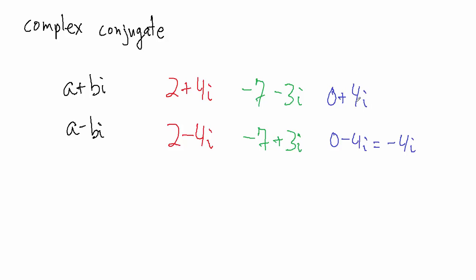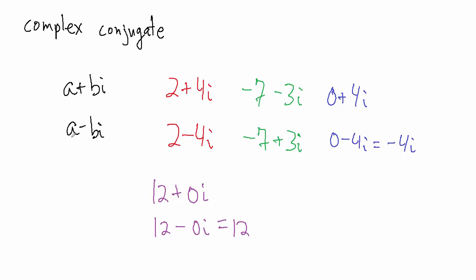So if you have a complex number which is just 4i, then the complex conjugate is going to be negative 4i. What if you have a complex number 12? That might look weird — aren't complex numbers supposed to have i's? Well, technically no. A real number is just a special type of complex number with imaginary part 0. So this is the same thing as 12 plus 0i, and the complex conjugate is going to be 12 minus 0i, which is still just 12. So if you take a real number and find the complex conjugate, you just get that same real number back, because nothing changes with the a — just the sign on b changes.